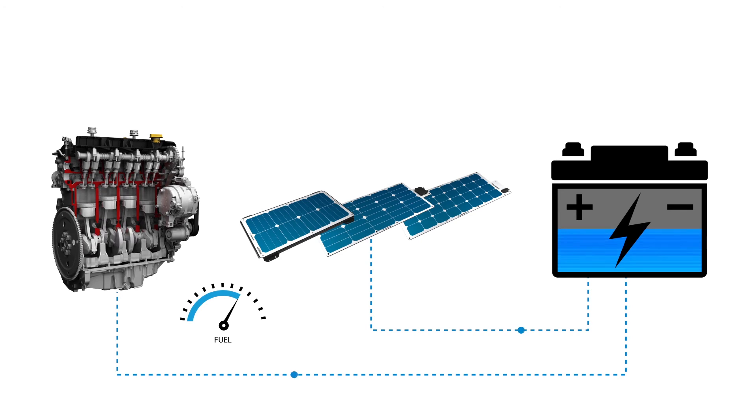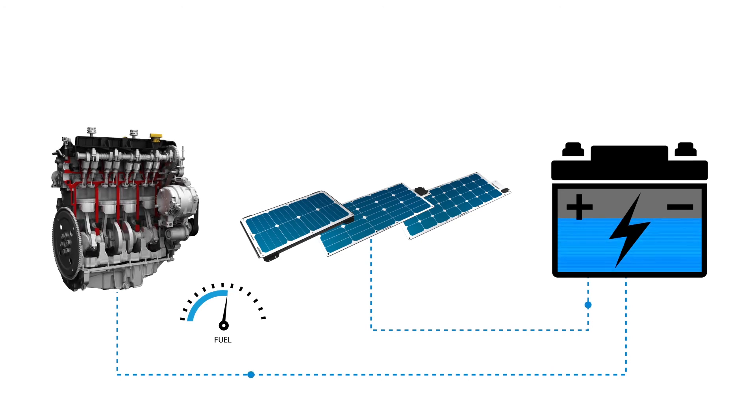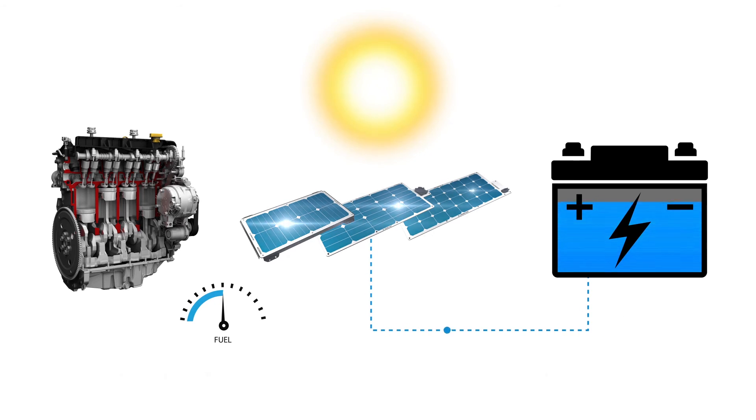Pairing a solar panel with alternator power allows your tractor engine to take a break from running. The solar panel takes over charging and finishes topping off the battery to a full charge.